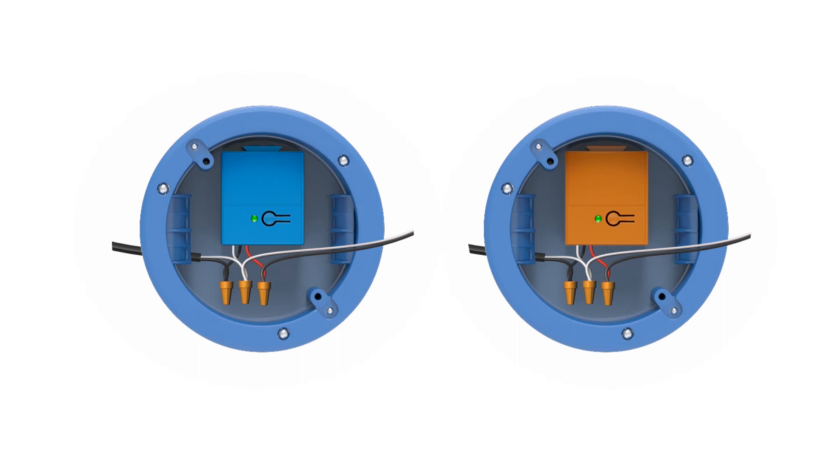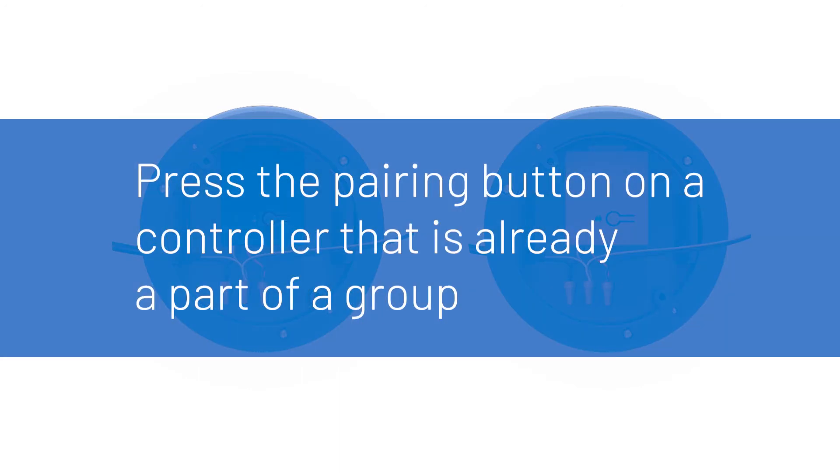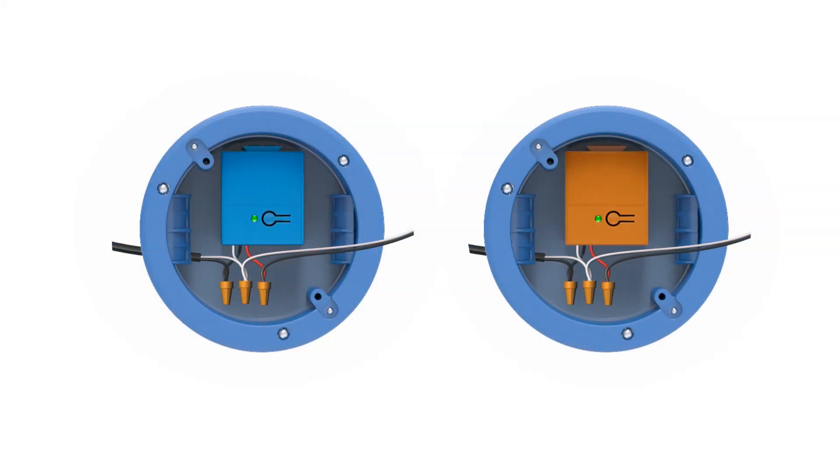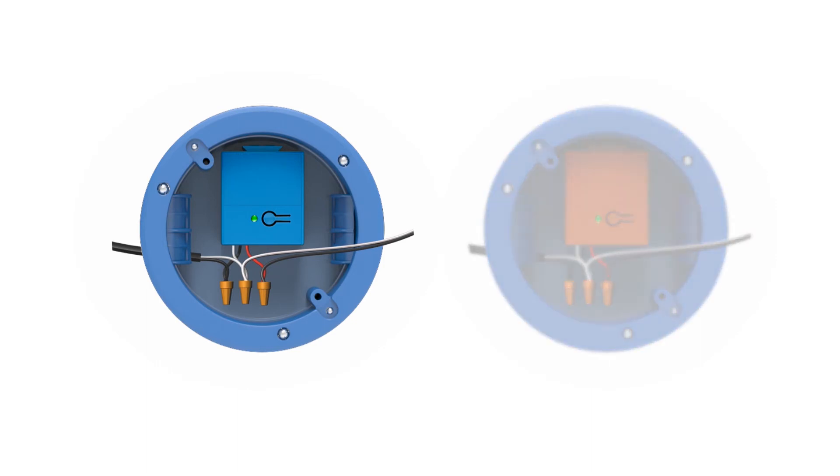To add a controller to an existing group, press the pair button on a controller that's already part of that group. If I were creating a new group with two ungrouped controllers it wouldn't matter which controller I started with, but in this example this blue controller is already part of the group I want to add to, so I press its pairing button first.